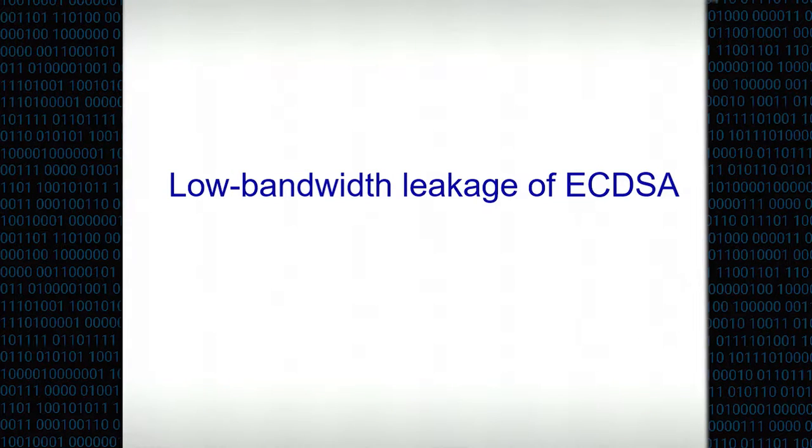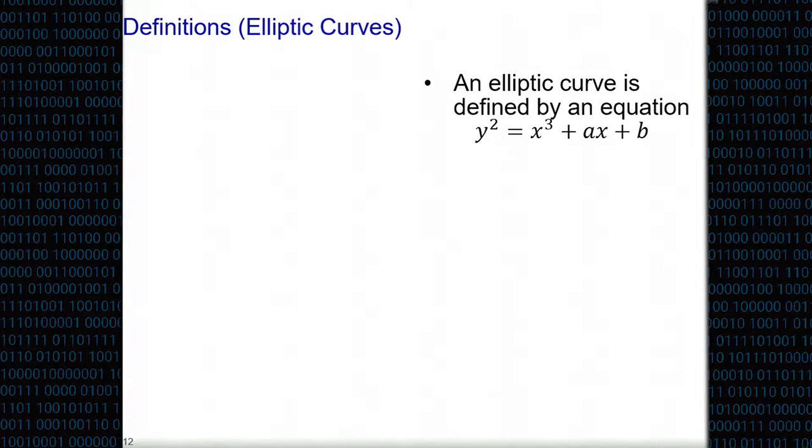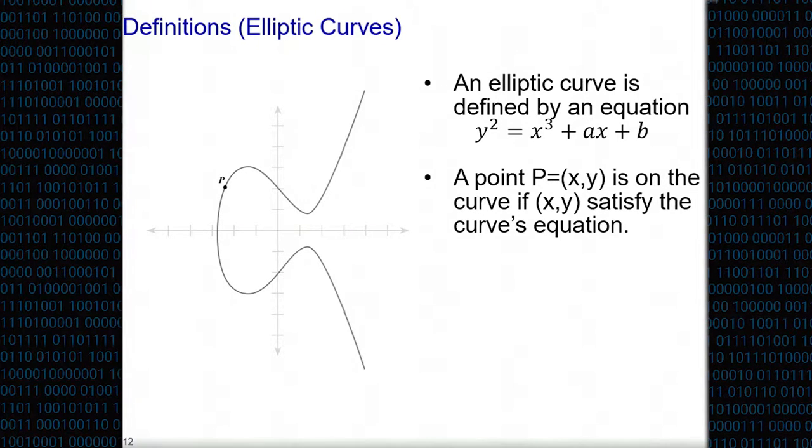While there is something to be measured here, we are not in the business of deducing coarse information about phone's activity. We care about stealing crypto keys, more specifically ECDSA keys. So let's steal some crypto keys. Let's look at how low bandwidth leakage of ECDSA might look like. ECDSA stands for elliptic curve digital signature algorithm. It has elliptic curves in it, so I must talk a bit about elliptic curves. An elliptic curve is defined by the equation y squared equals x cubed plus ax plus b, where a and b are the curve parameters.